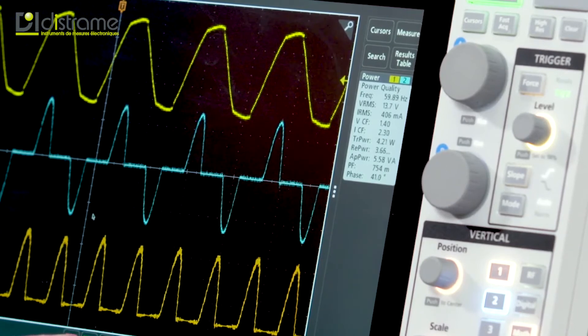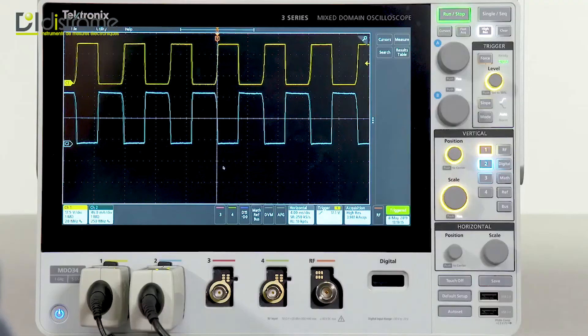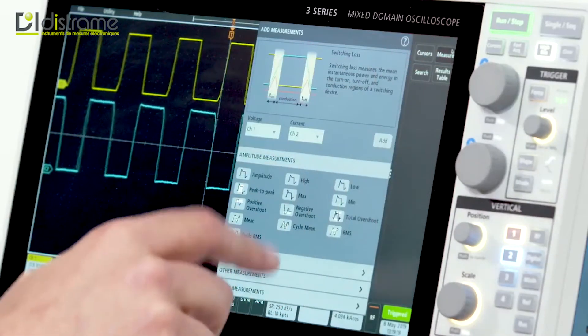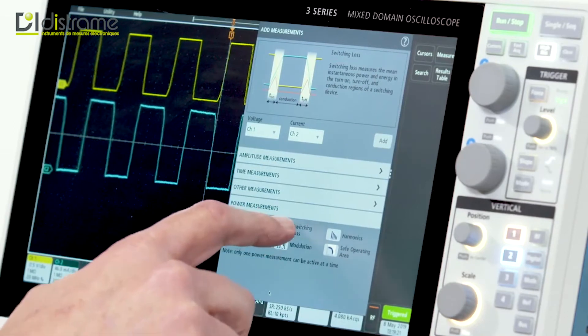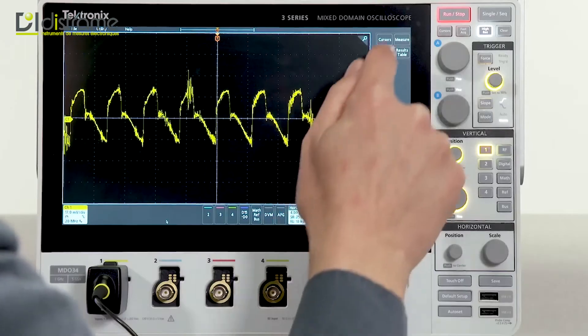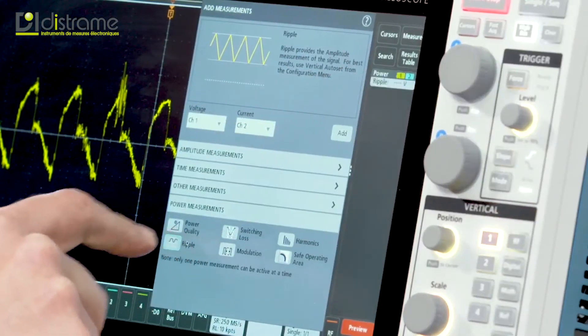In addition, we can even do harmonics analysis on the AC input. Moving on to the switching section of your power supply, you can also take switching loss measurements. And automated ripple measurements make it easy to check the outputs of your supply.